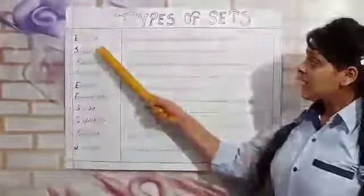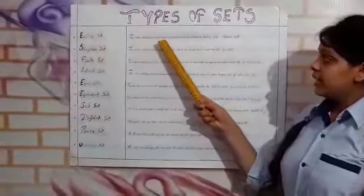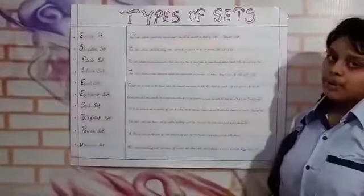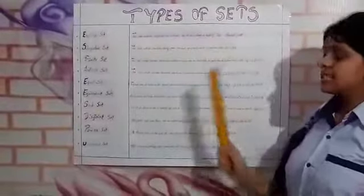Let me see in detail. Empty Set: the set which contains no element in it is called the Empty Set, and the symbol of Empty Set is phi.